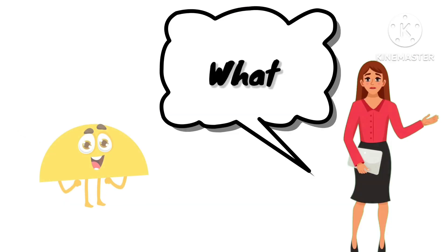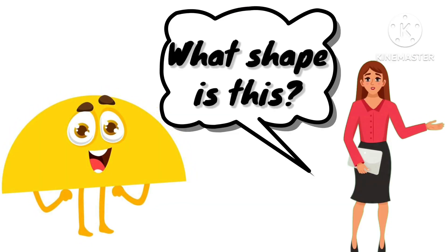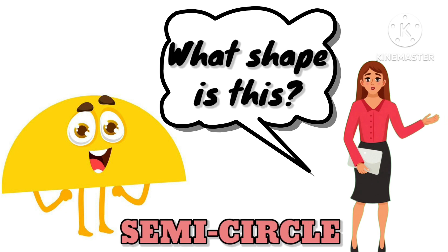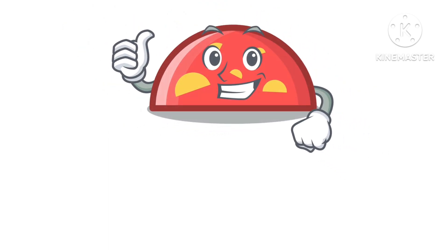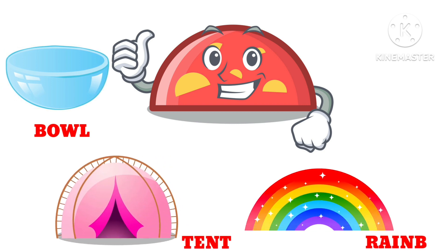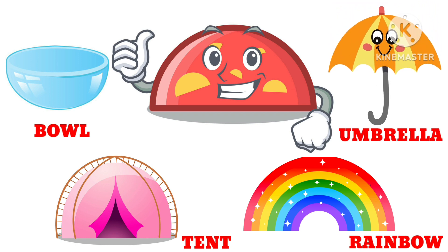What shape is this? This is a semicircle. So kids, let's learn about the objects that are semicircle in shape. Examples: bowl, tent, rainbow, and umbrella are all semicircle in shape.